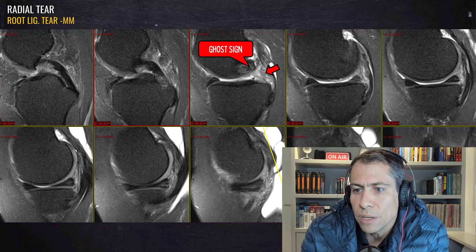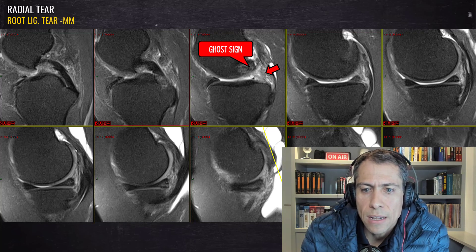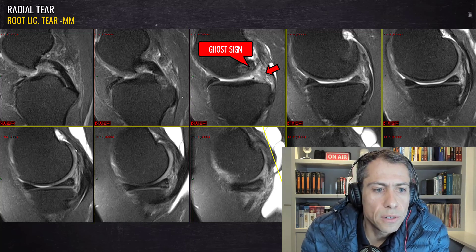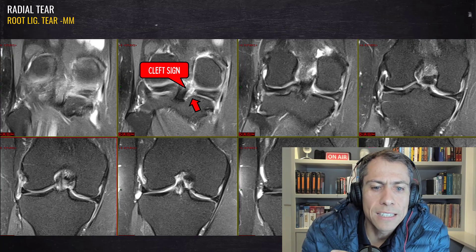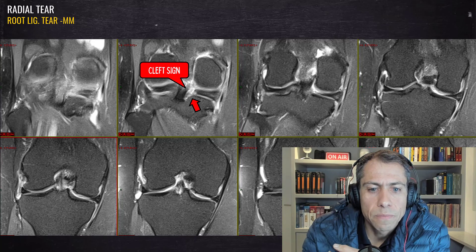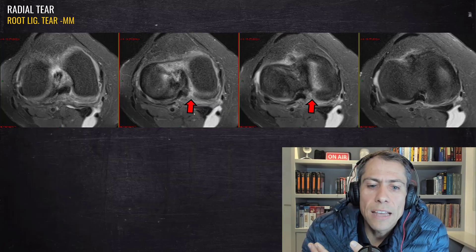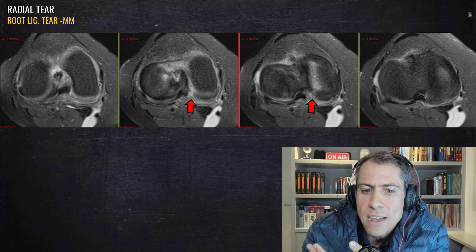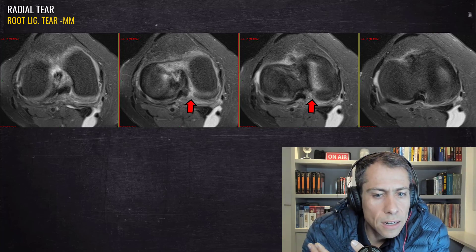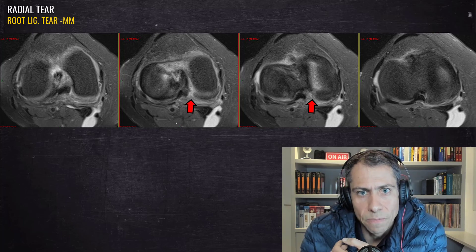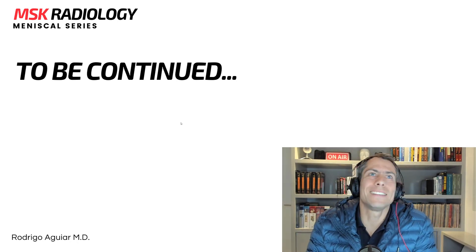Here we can see the posterior horn of the medial meniscus, and at this level we cannot see the junction between the posterior horn and the root ligament. We can see one part of the root ligament here, and here is the radial tear of the posterior root ligament of the medial meniscus. On the coronal plane, there is an area where no meniscal tissue is visible — this works like a cleft sign. On the axial plane, we can clearly see the tear at the posterior root ligament.